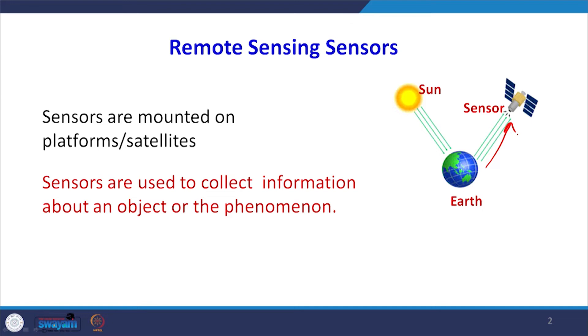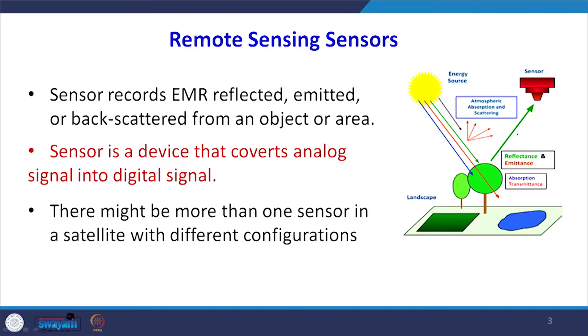Satellites carry different kinds of sensors mounted on platforms, and these sensors collect the reflected radiation from the earth surface. The sensors record the reflected energy coming from the object, and also the emitted energy or backscattered energy from the object, which is captured by the sensor system.